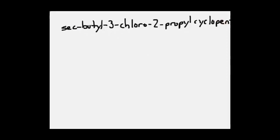For the last name, sec-butyl-3-chloro-2-propylcyclopentane. Start with the parent name, cyclopentane, which is a pentagon shape. I'm going to number clockwise from the top: 1, 2, 3, 4, 5.